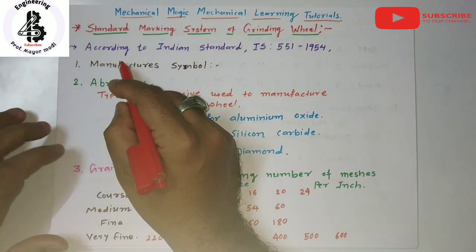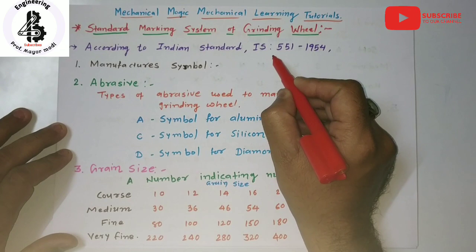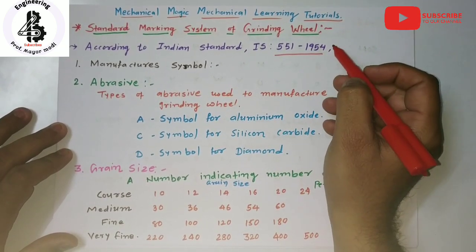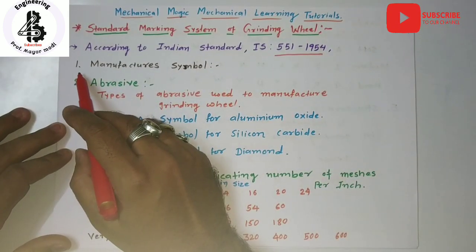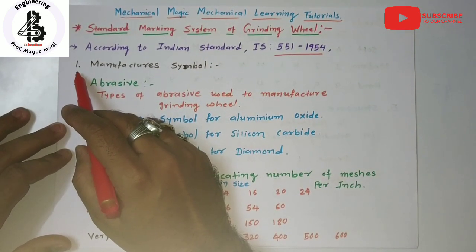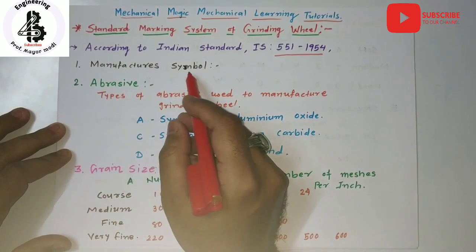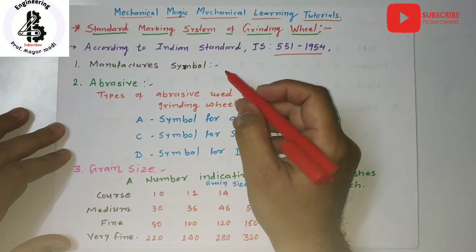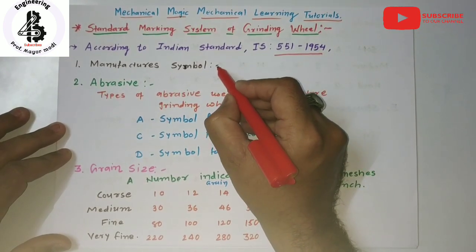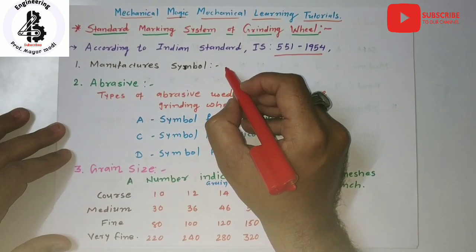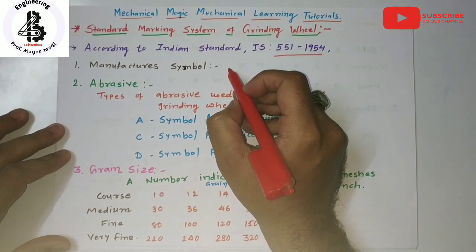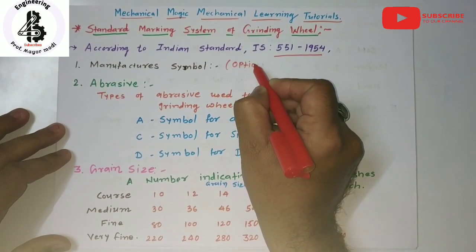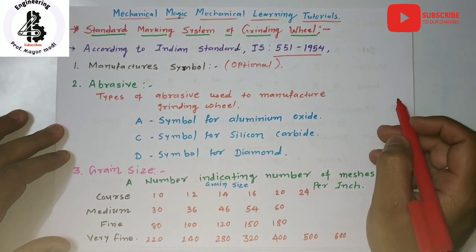Starting with the Indian Standard IS 551 1954. The first letter or number indication will be the manufacturer's symbol. This will be changed by different manufacturing industries of a grinding wheel, so that will be an optional kind of thing — it will be available on the grinding wheel.